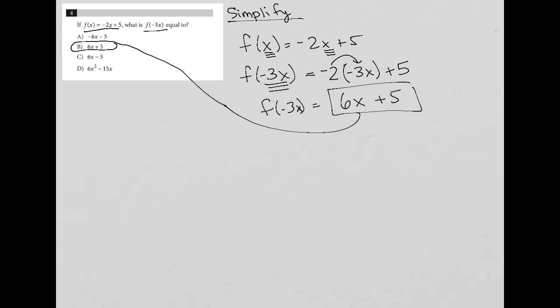Now, the other way to do this, just because it's a good habit whenever you see variables in the answer choice, to think of the possibility of using plug-in your own number. So in this case, with this strategy, I could say that x equals 2. So if x equals 2, that means f of negative 3x is really f of negative 6, because negative 3 times 2 is negative 6.